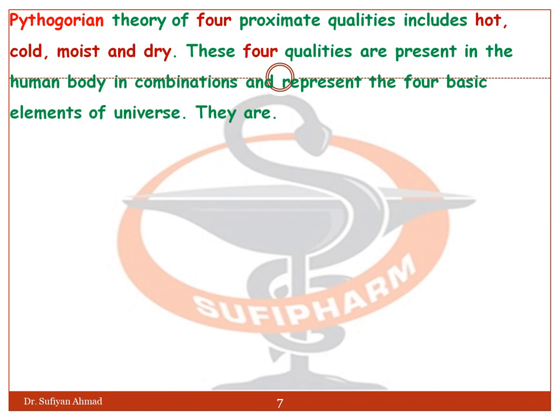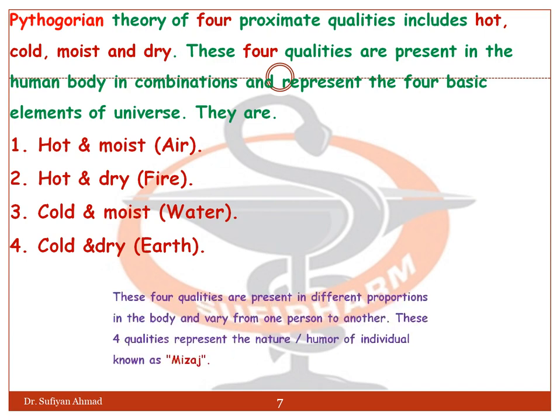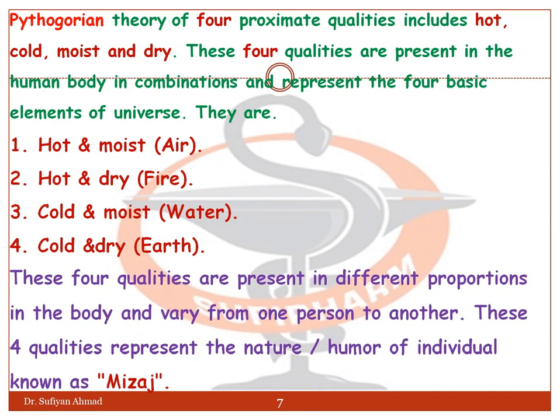These four qualities are present in the human body in combination and represent the four basic elements of the universe. Hot and moist means air; hot and dry means fire; cold and moist means water; and cold and dry means earth. These four qualities are present in different proportions in the body and vary from one person to another.